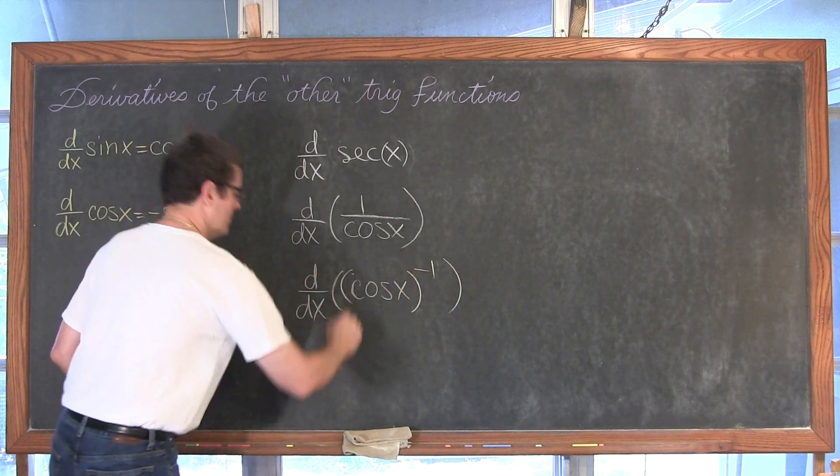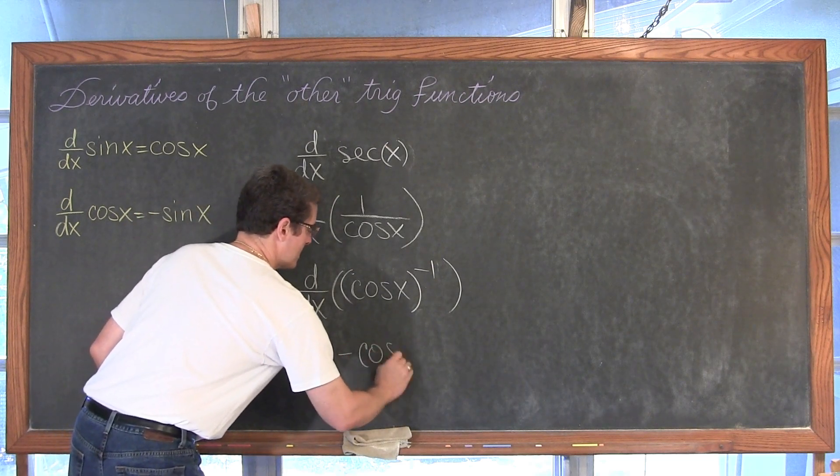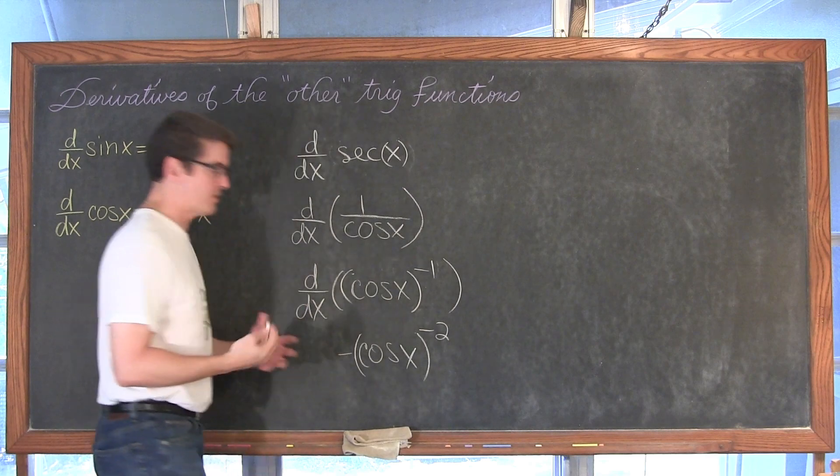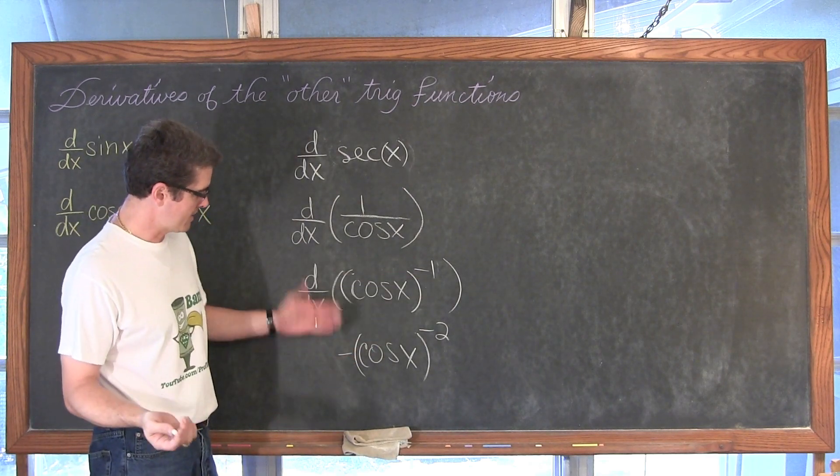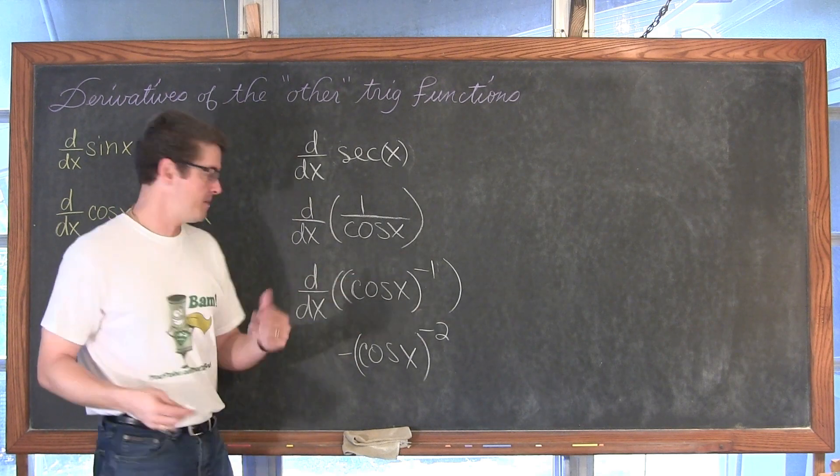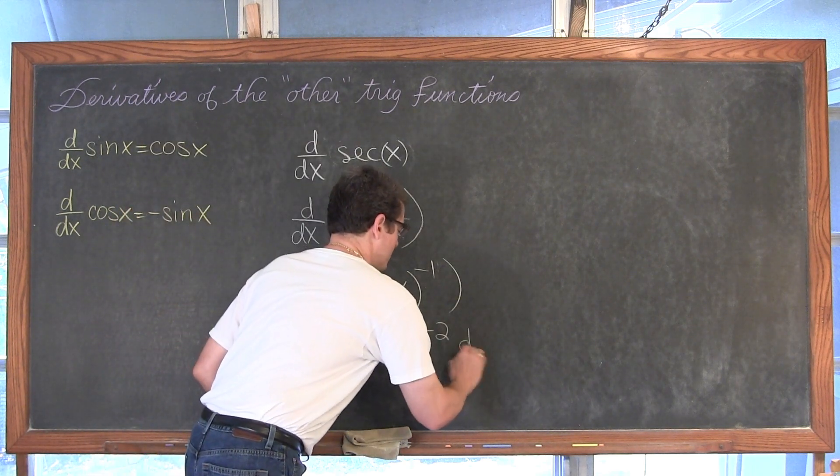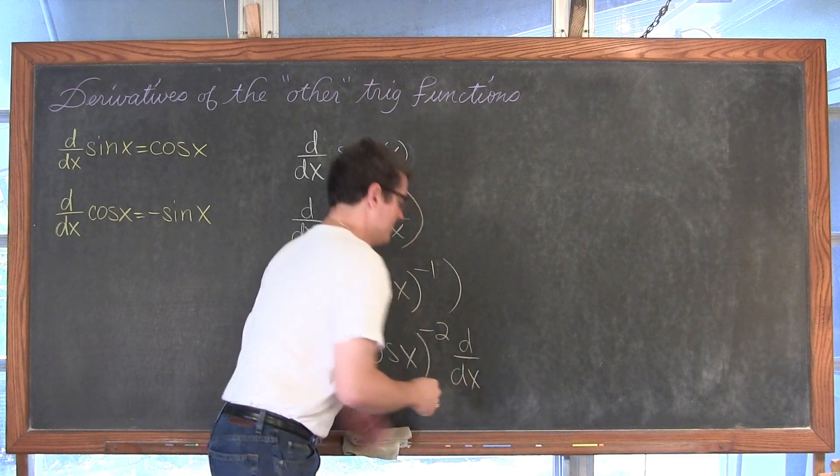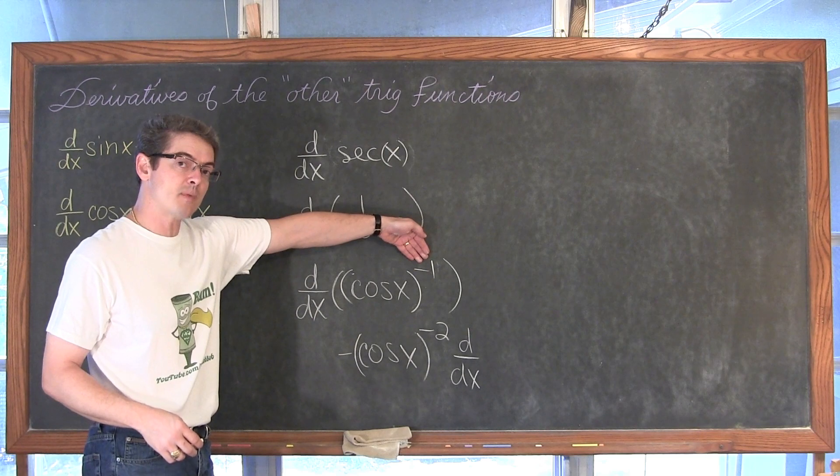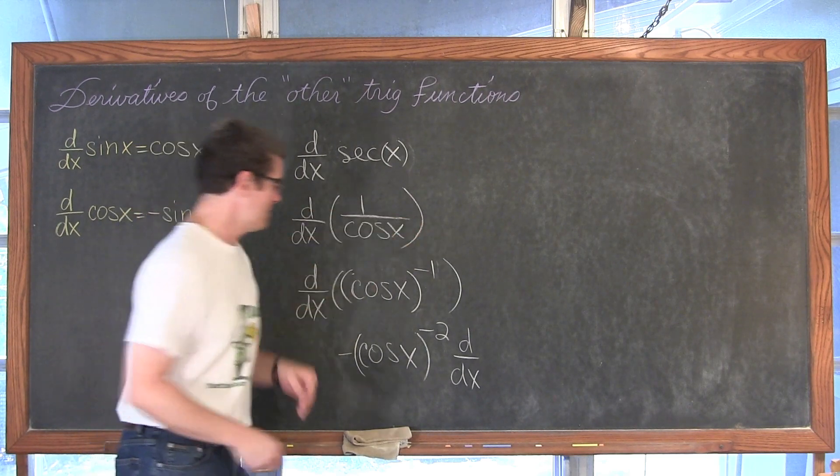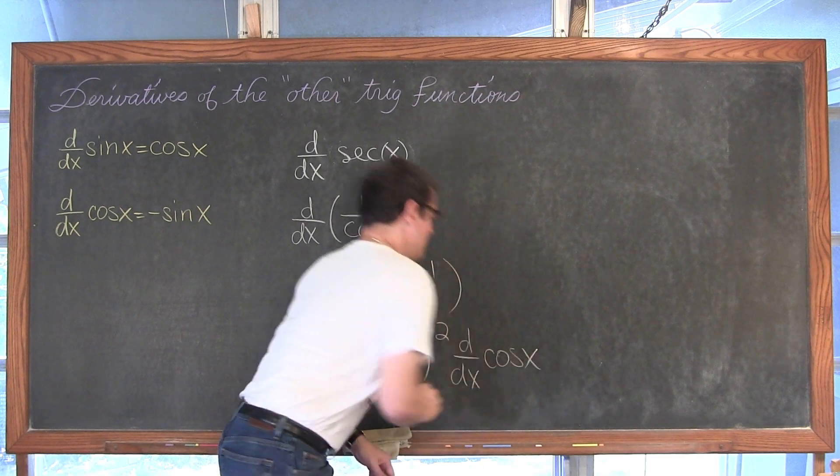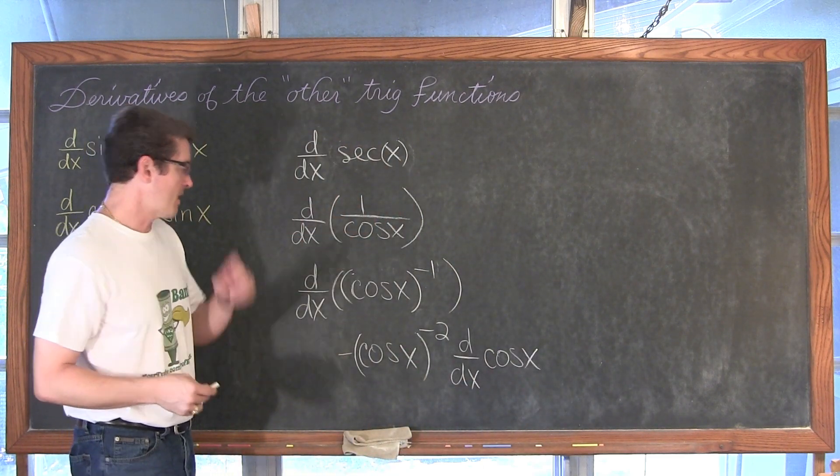So we have, bring the exponent down, negative cosine of x. And of course, when I'm doing the general power rule, I bring this exponent down. And I can write just a negative sign, or you can write negative 1 here. Reduce the exponent by 1, and now we're going to multiply by the derivative, again, with respect to x, of the inside function. See, the cosine of x is the inside function of this power of negative 1. So, you know, times the derivative of cosine of x, that inside function.